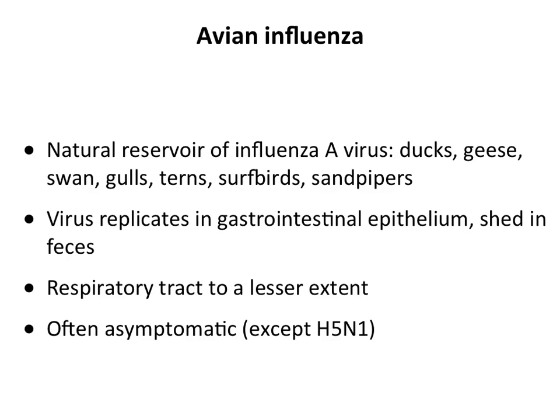In particular, water birds and aquatic birds are the reservoirs for all influenza types — ducks, geese, swans, gulls, terns, surf birds, sandpipers. In birds, the infection is largely a gastrointestinal infection. The virus replicates in epithelial cells of the GI tract and is shed in the feces. Birds spread virus everywhere as they fly, contaminating water. It also replicates in the respiratory tract, but to a lesser extent, and in many cases these infections are asymptomatic.